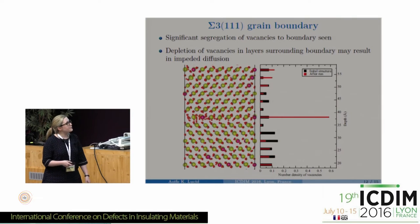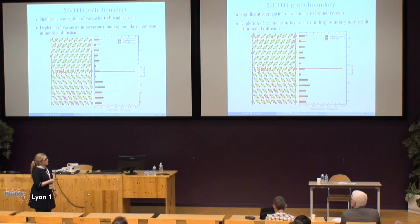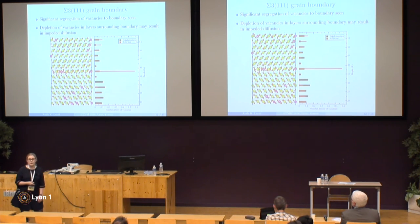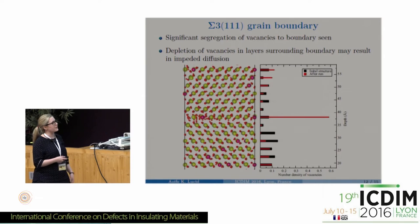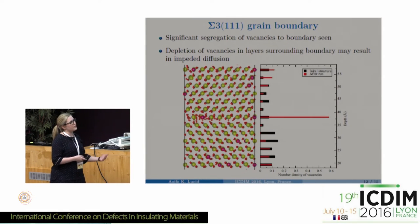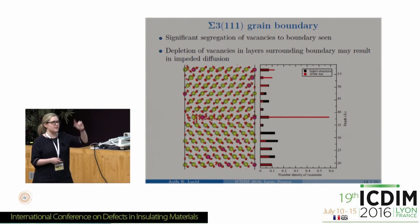For the 1-1-1 grain boundary, the simulation cell is about 80 Å deep with two grain boundaries — one at each end of the cell and one in the middle. The same depth versus vacancy number density plot shows vacancy segregation that is much more significant than at the surface. There is a clear and large movement of vacancies towards the grain boundary, along with severe depletion of vacancies in the sub-boundary layers surrounding it.